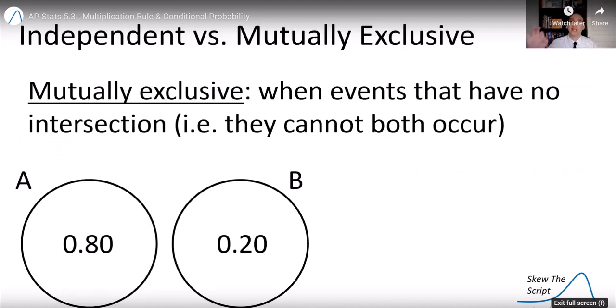Now, a lot of people get confused between independent and mutually exclusive. Let's talk about that. We talked last time, mutually exclusive events are when events have no intersection. They cannot both occur. They cannot co-occur. So in this case, let's say those events A and B, they're mutually exclusive. The probability of event A happening is 0.8. The probability of event B happening is 0.2. There is no intersection in this Venn diagram because they are mutually exclusive.